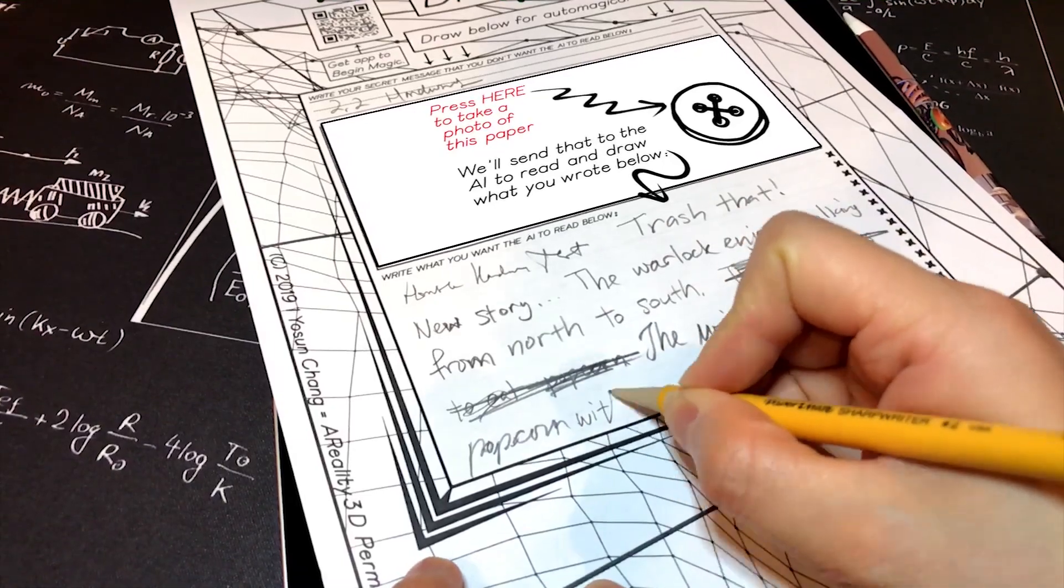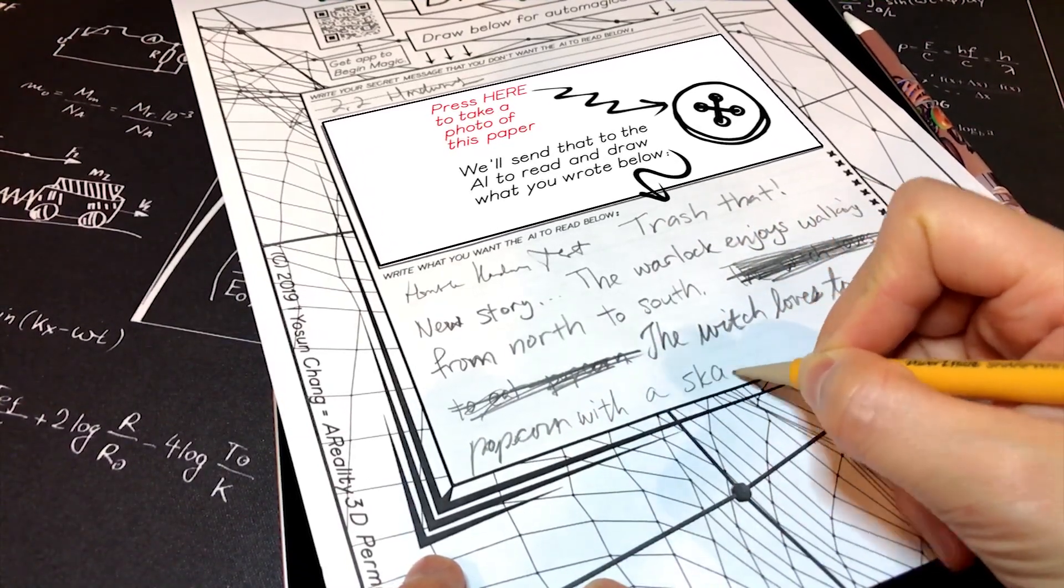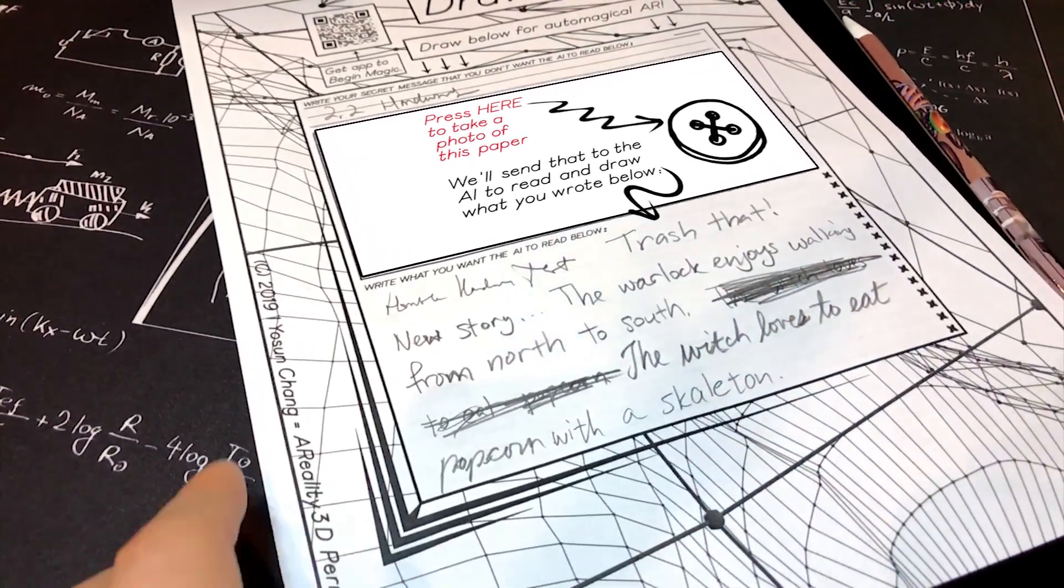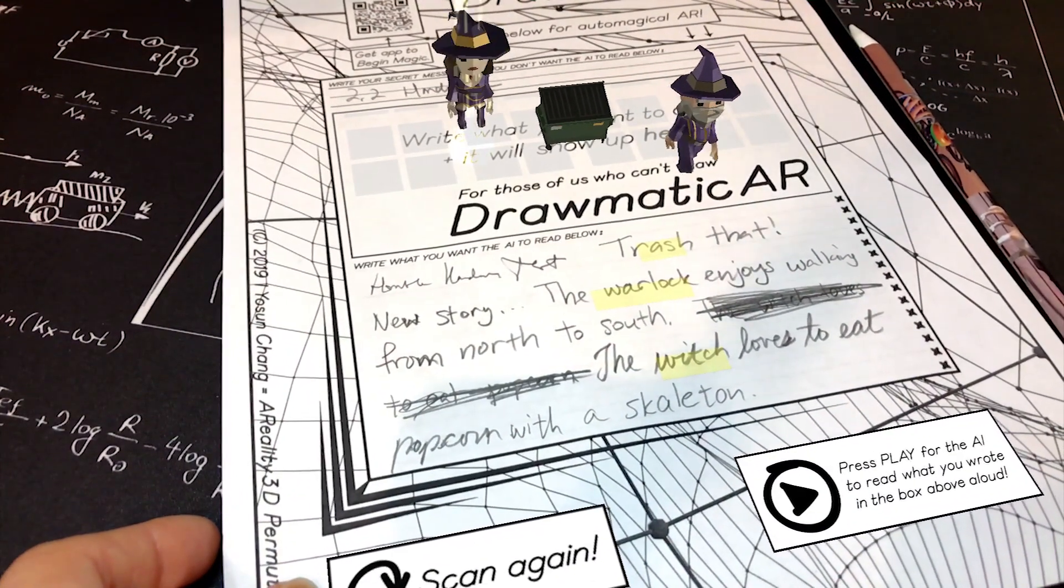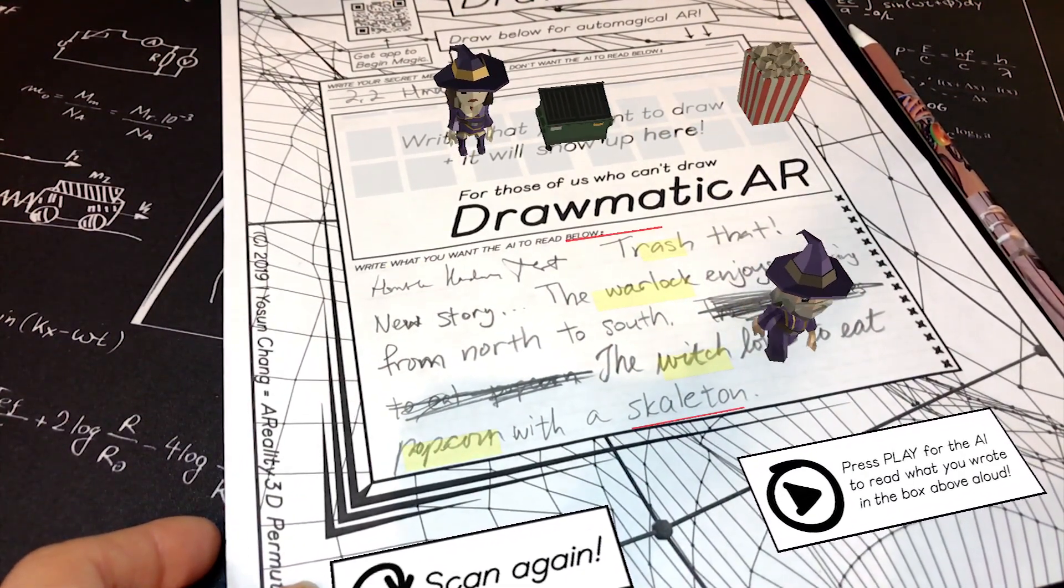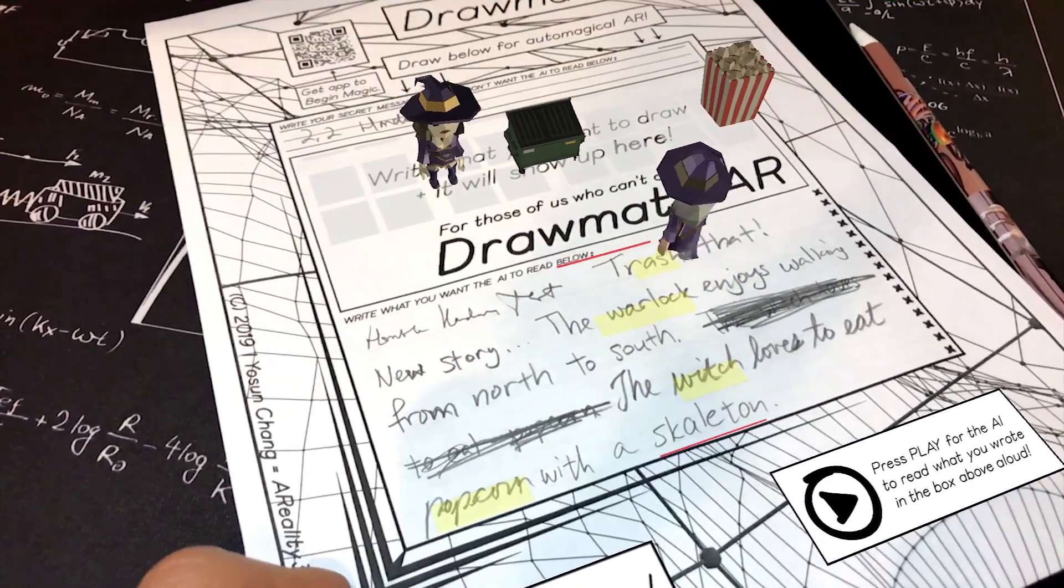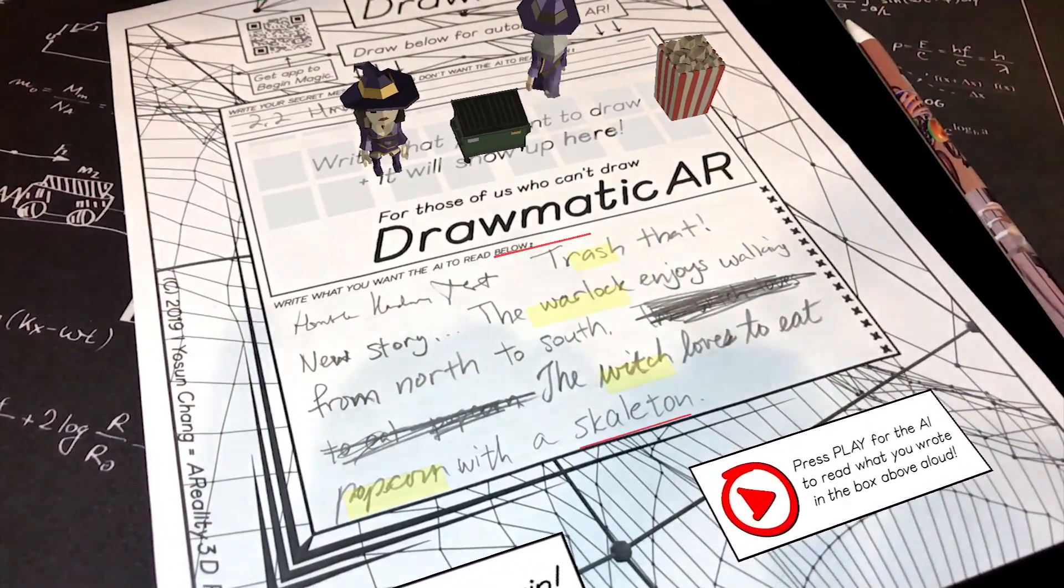Dramatic AR can also be used to help students learn to print and practice their handwriting, even their cursive. Dramatic AR can make teaching grammar and spelling fun. You only get to be a director when you construct proper sentences and spell things right.